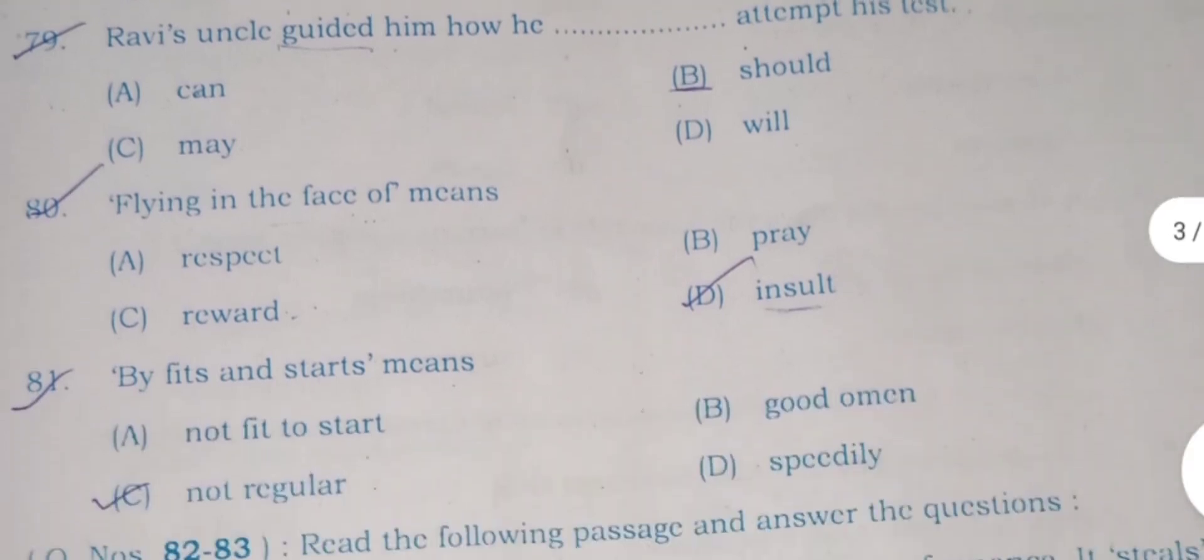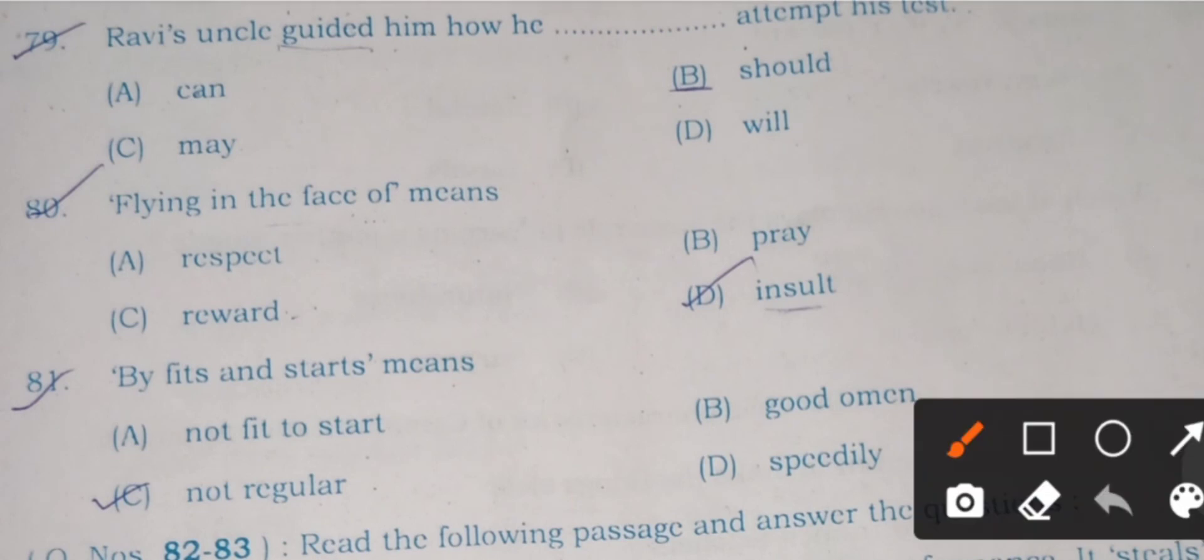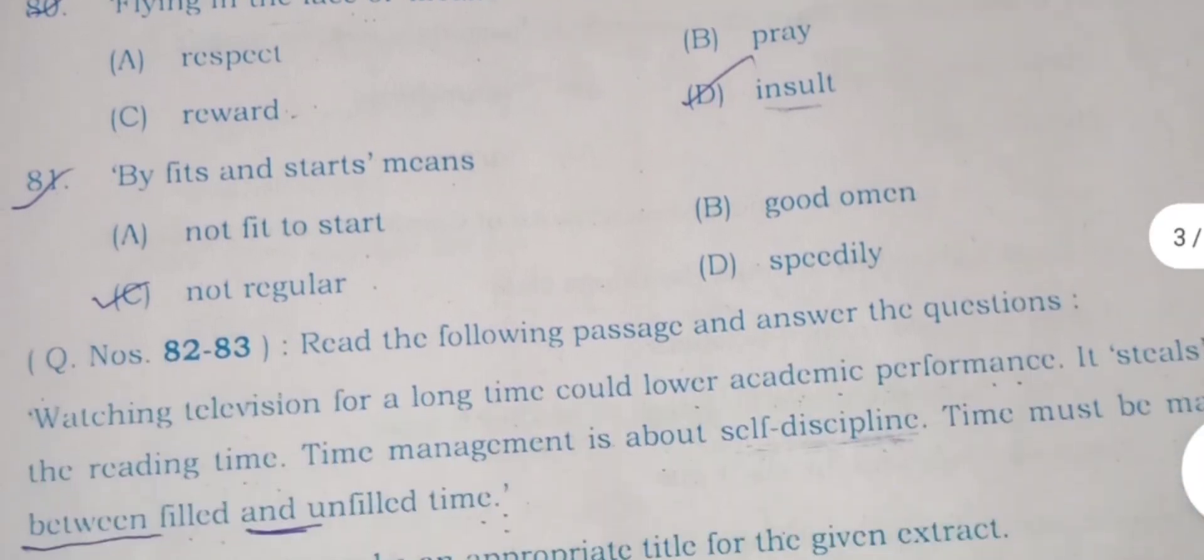Question 80: Flying in the face of means A) respect, B) pray, C) reward, or D) insult. Here spelling of 'pray' is given wrong - P-R-E-Y is the right word. Here D is the right answer. Flying in the face of means insulting someone.